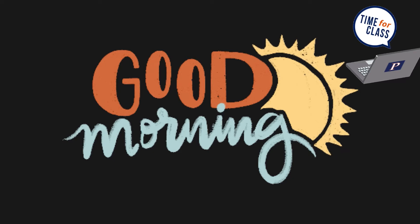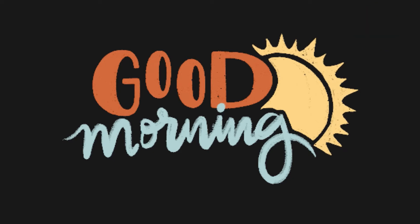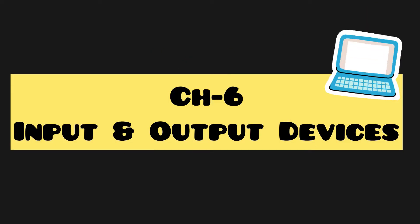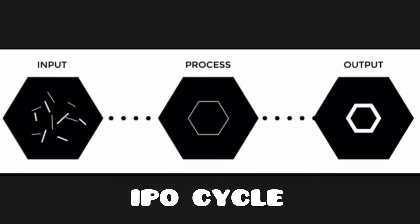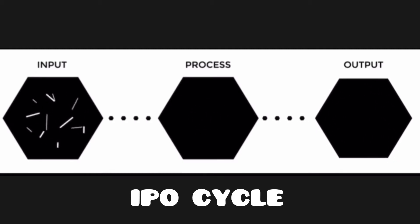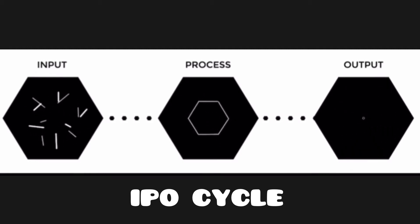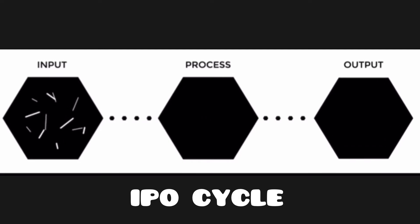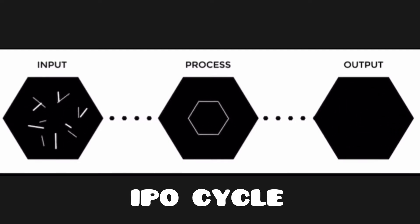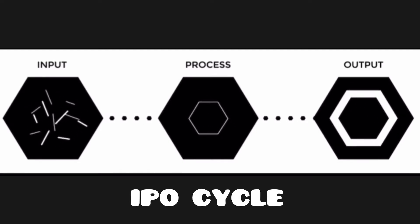Good morning my dear kids. In our last class we had started our chapter 6, i.e. Input and Output Devices, and we learnt about input, process and output, i.e. the IPO Cycle. So kids, now you know how our computer works.